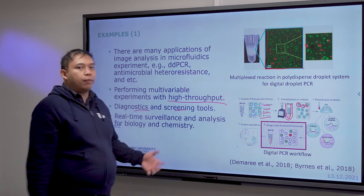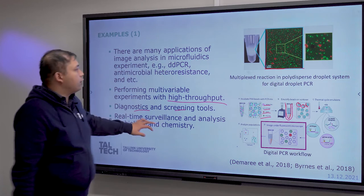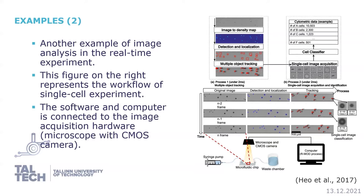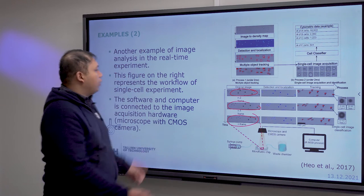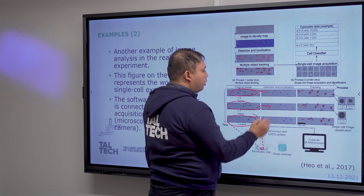You can also run experiments in real time, checking at different time points to see what happens between one timeframe and another. This is an example of real-time detection — there is an original image and then different frames that you can process in real time. Here they track a droplet as it travels some distance.